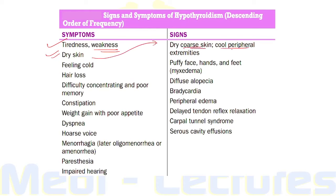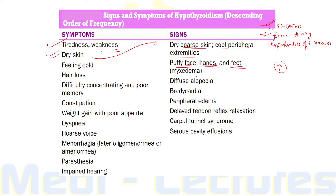Dry skin is associated with decreased sweating, thinning of the epidermis, and hyperkeratosis of the stratum corneum. Increase in dermal glycosaminoglycans traps water, giving rise to skin thickening without pitting, characteristically seen in the face as puffy face, hands and feet — this is known as myxedema. Patients usually have pallor with yellowish discoloration of skin due to increased carotene accumulation.